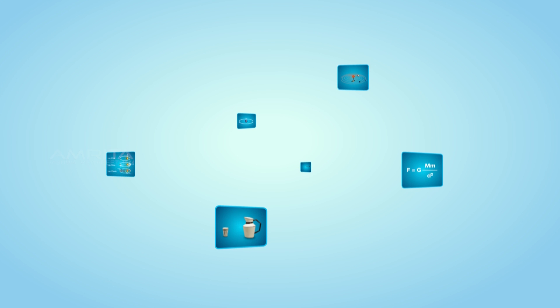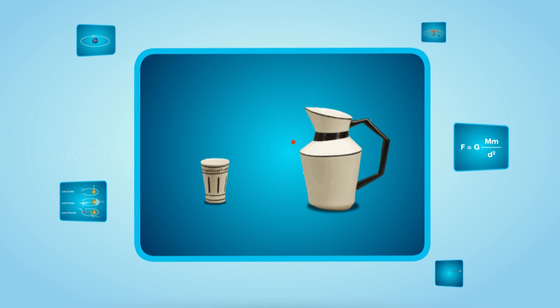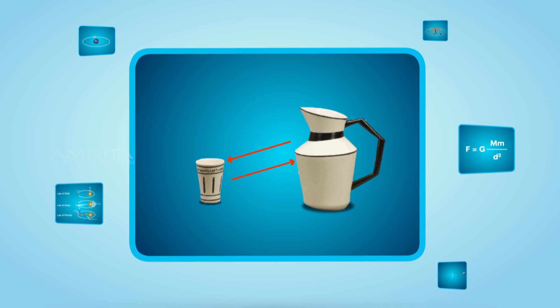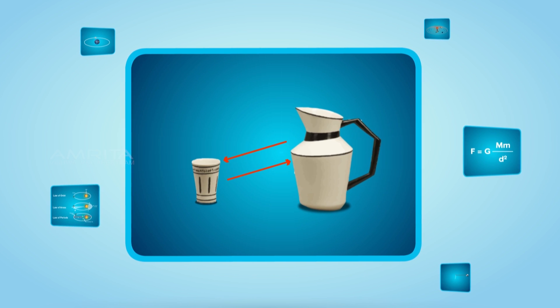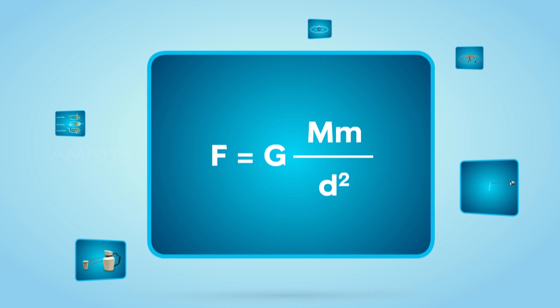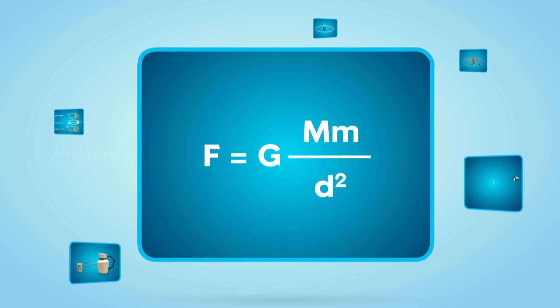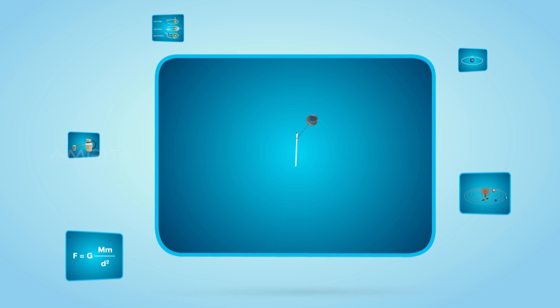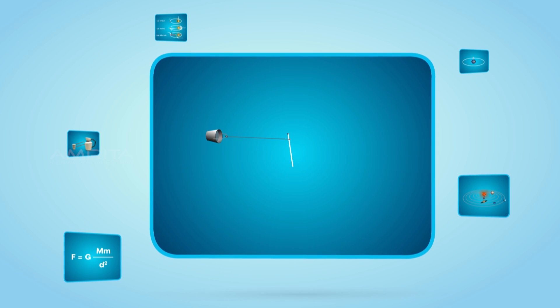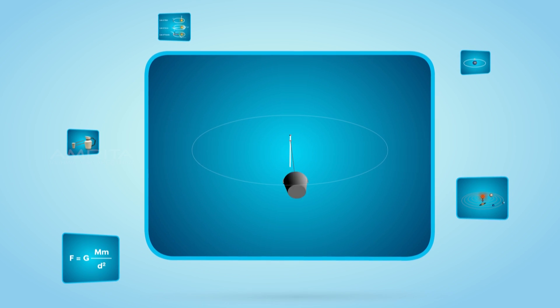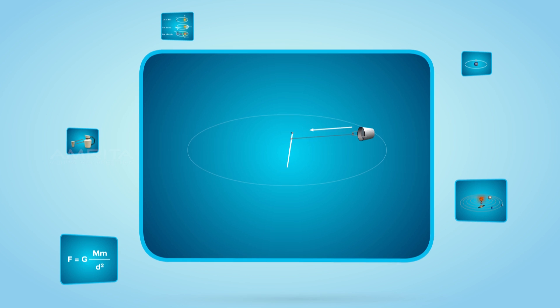Things to remember. The force of attraction between objects is known as gravitational force. According to the law of gravitation, F is equal to G into Mm by d square. The force that causes a moving body to accelerate and move along a circular path towards its center is called centripetal force.